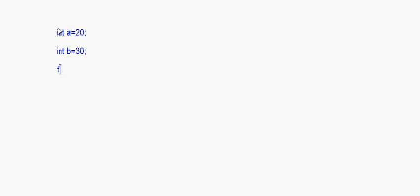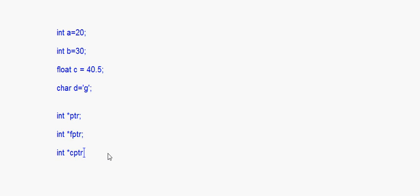Suppose we have variables: int a = 20, int b = 30, float c = 40.5, and char d = 'g'. Now we declare some pointers: int *ptr, float *fptr, and char *cptr. These are just declarations of pointers. Once declared, the pointers and these variables exist in memory.